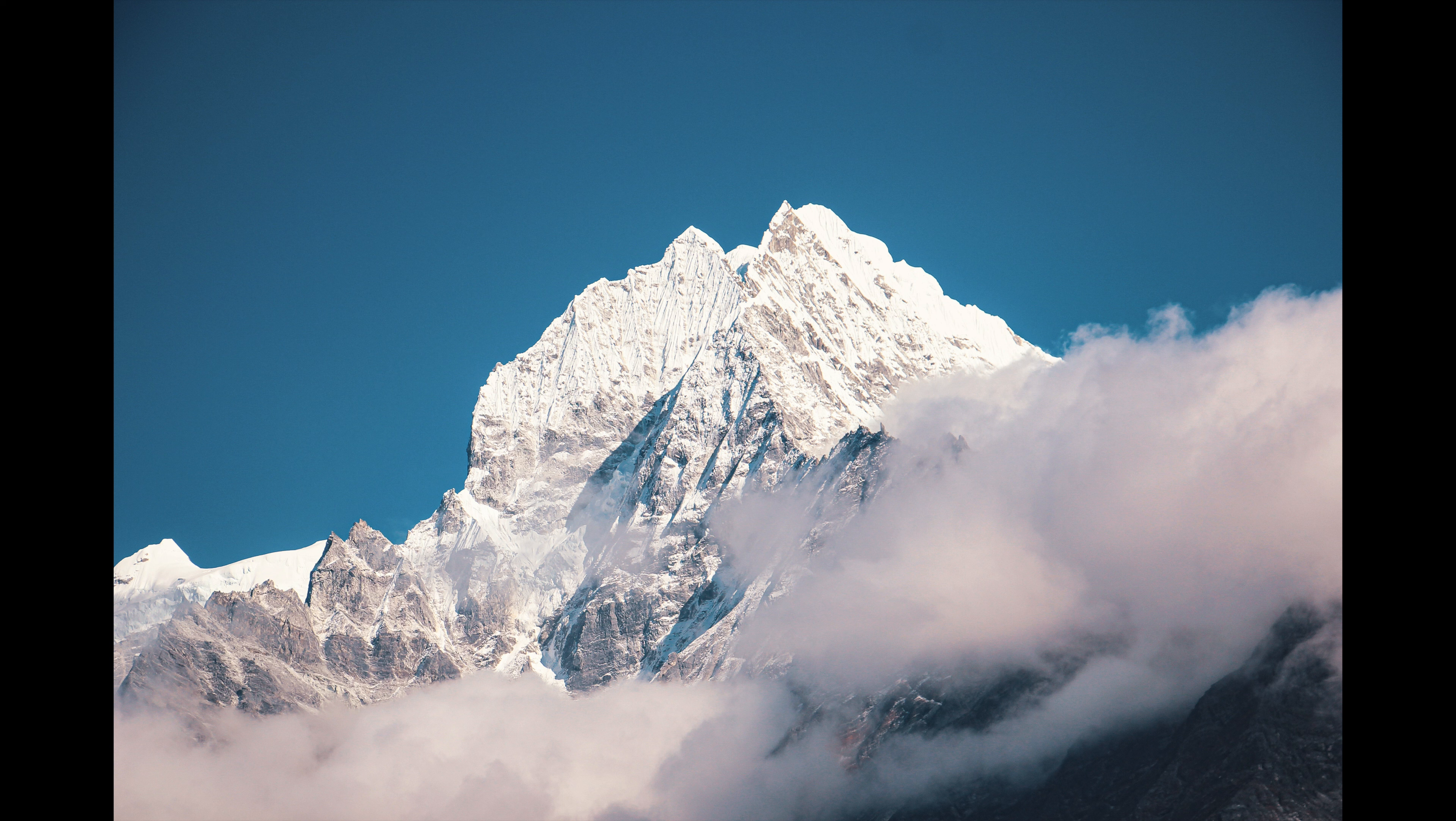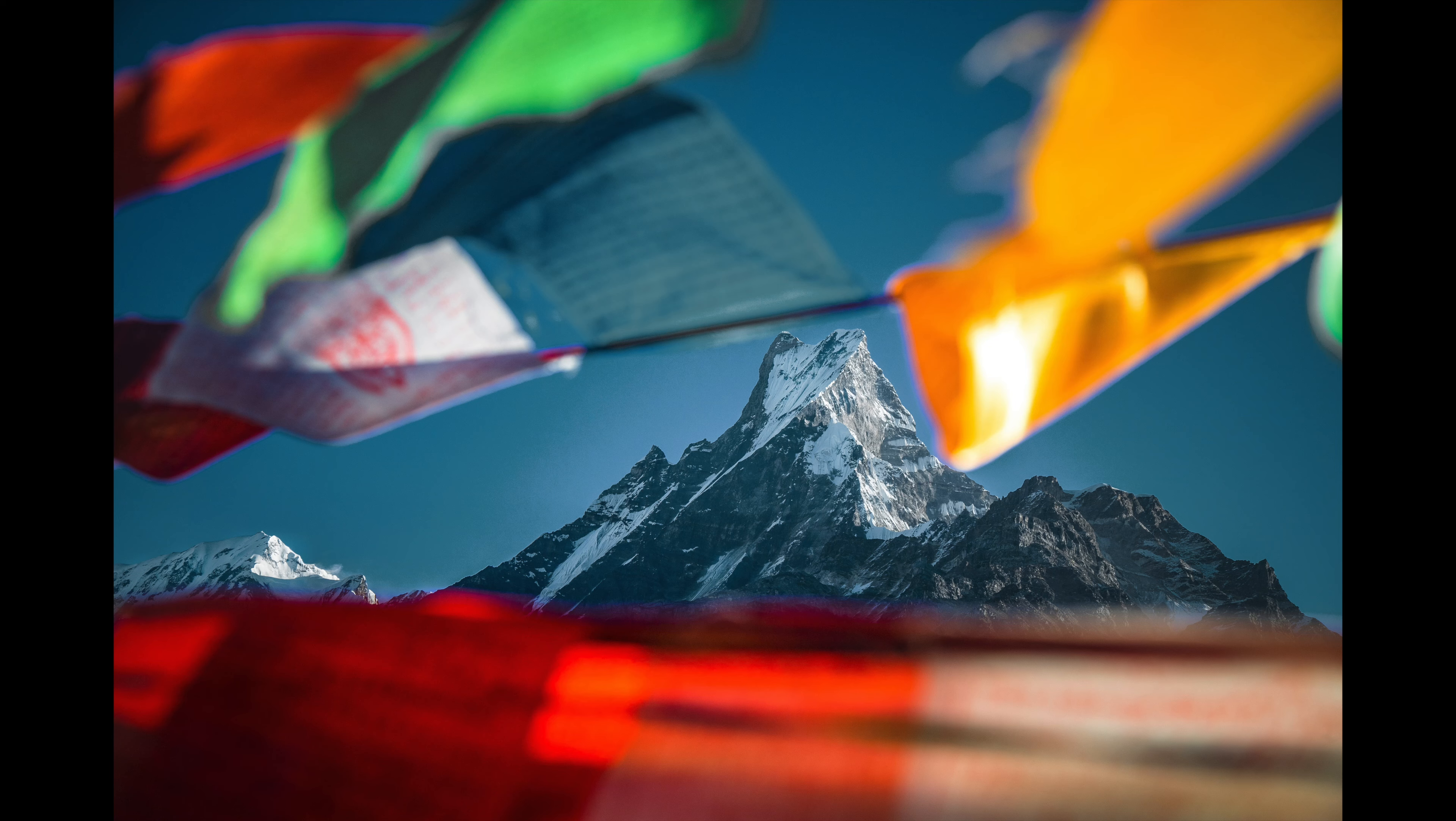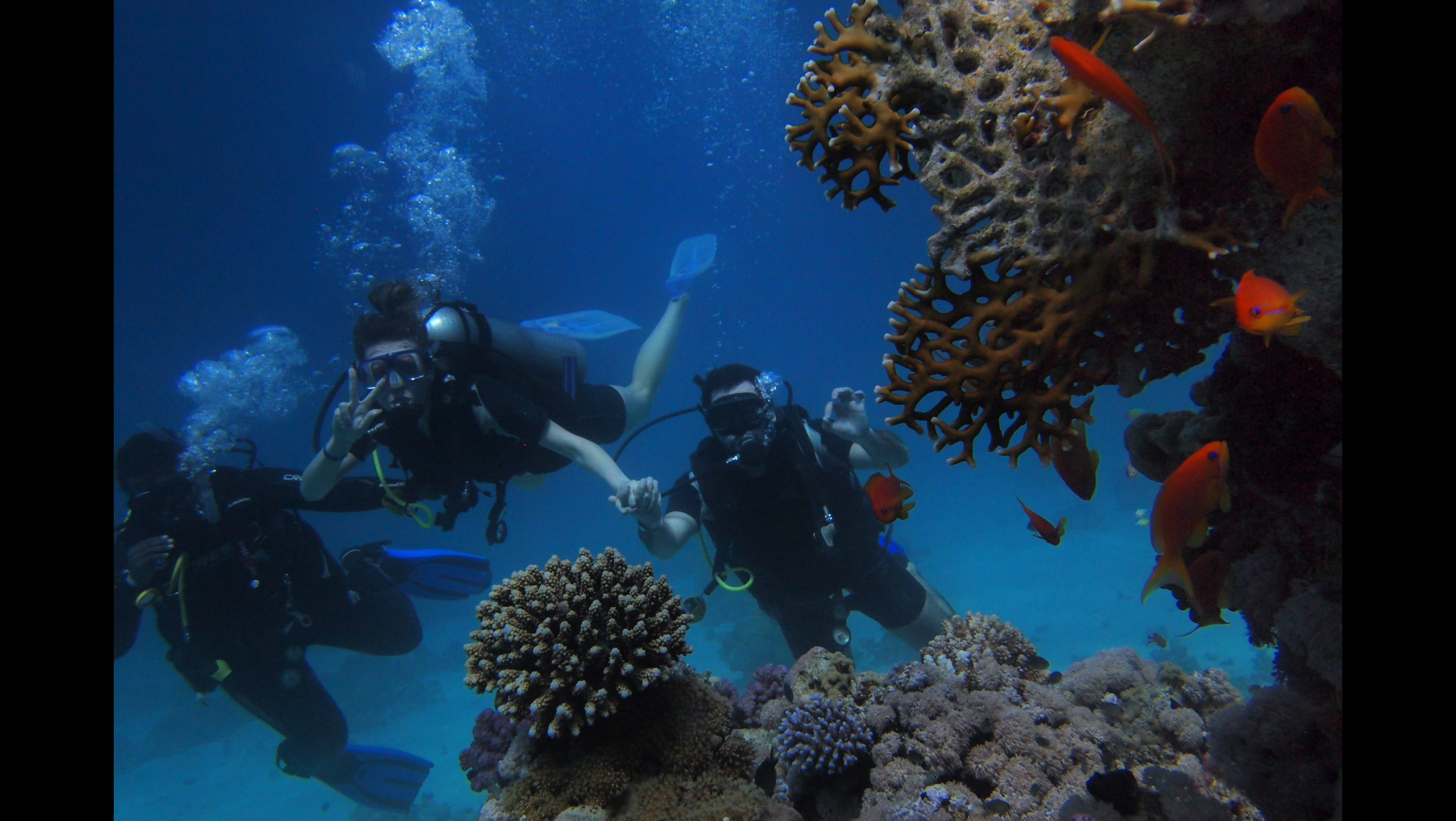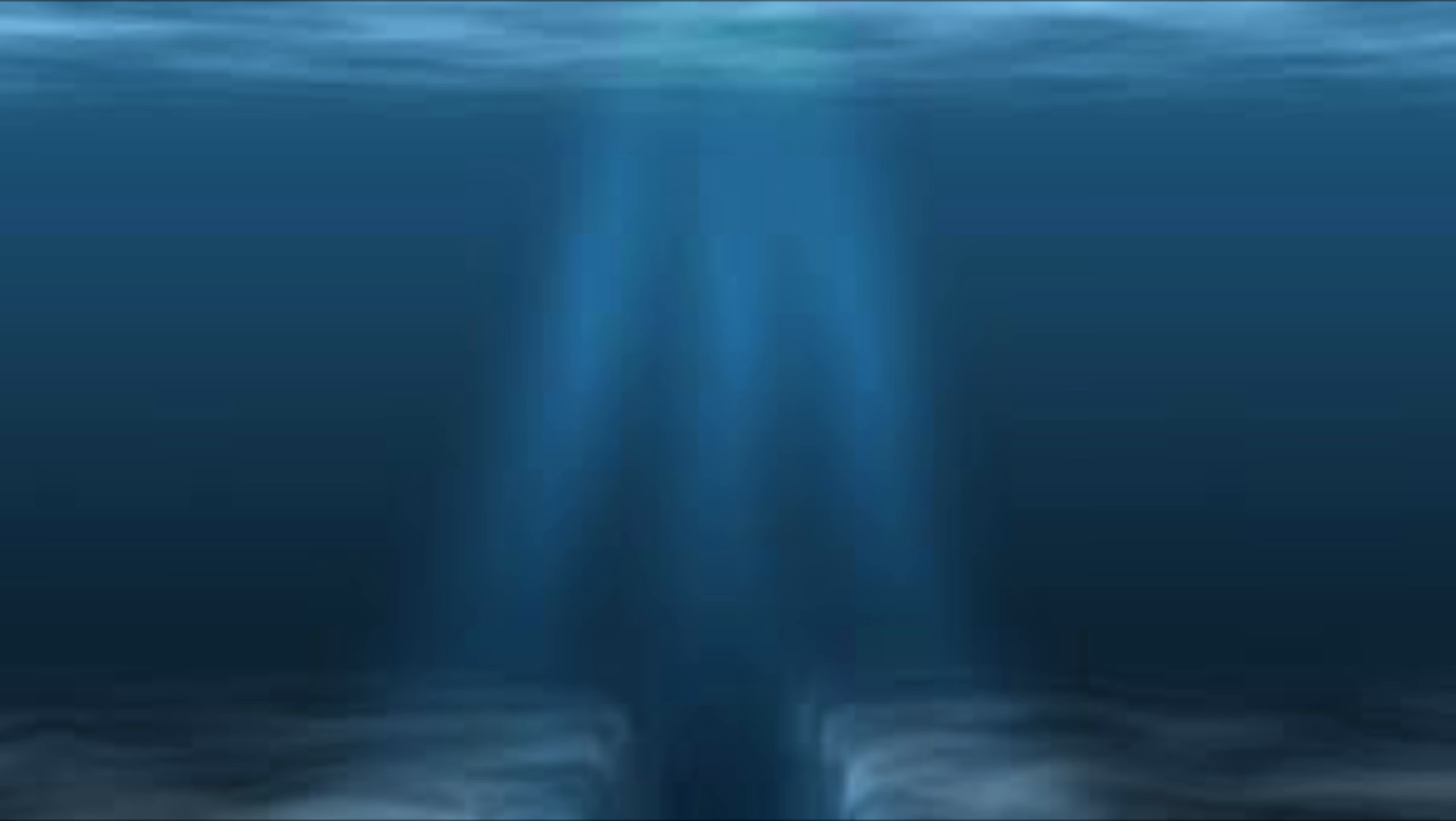A global maximum, on the other hand, is the highest peak in the entire domain and range. It's the absolute maximum value the function can take, just like the summit of Mount Everest is on our planet. The exact same logic applies to minimum points. A local minimum is the lowest point in its immediate vicinity, while a global minimum is the absolute lowest point the function can reach, just like the Mariana Trench is also on our planet.